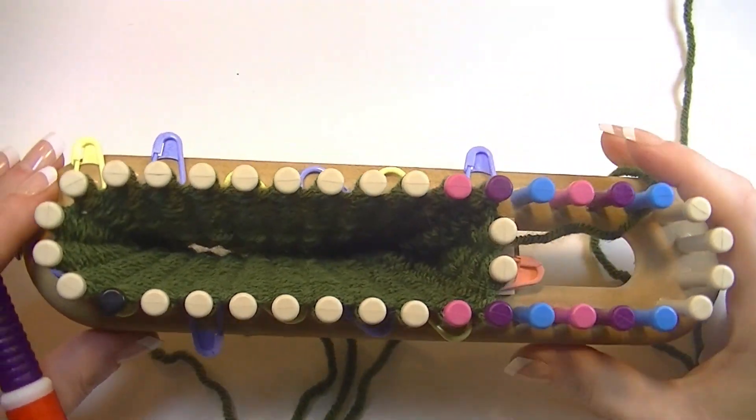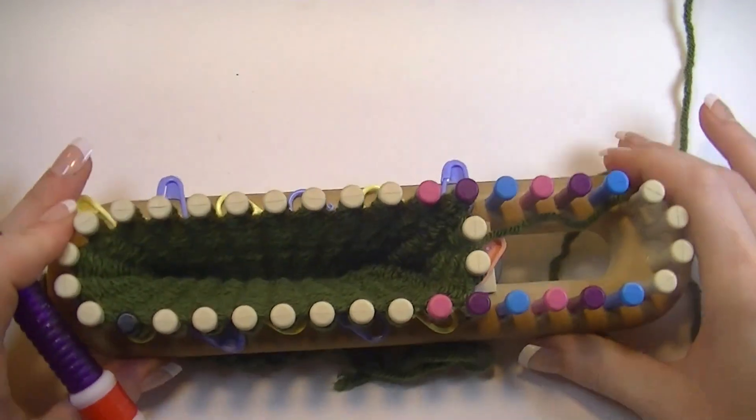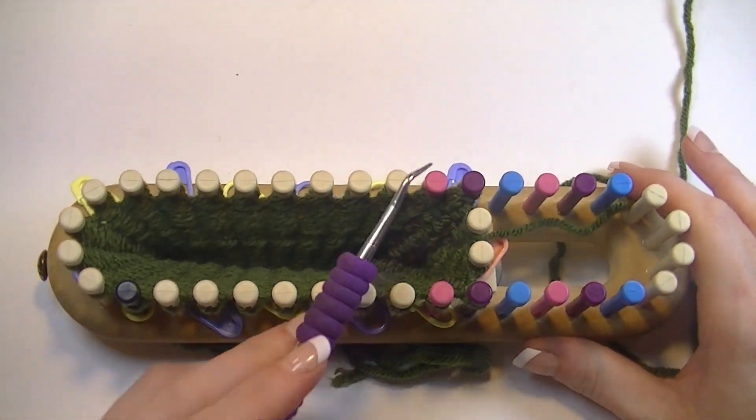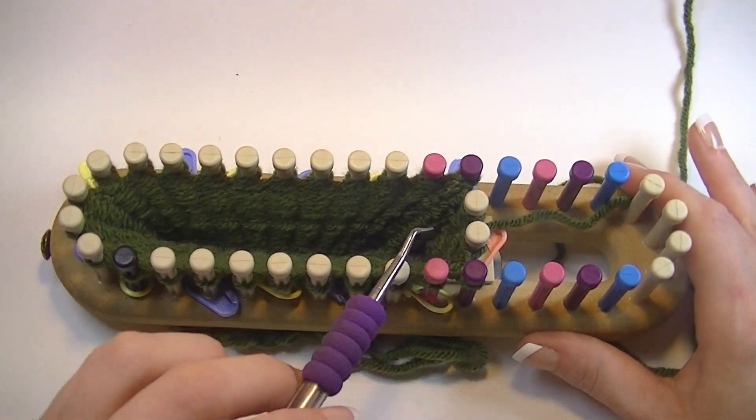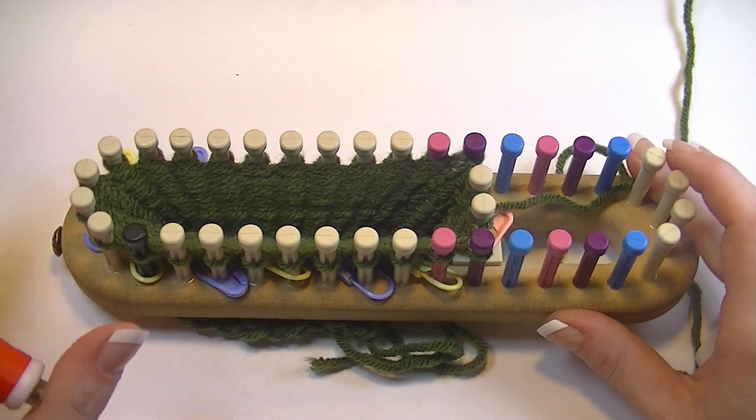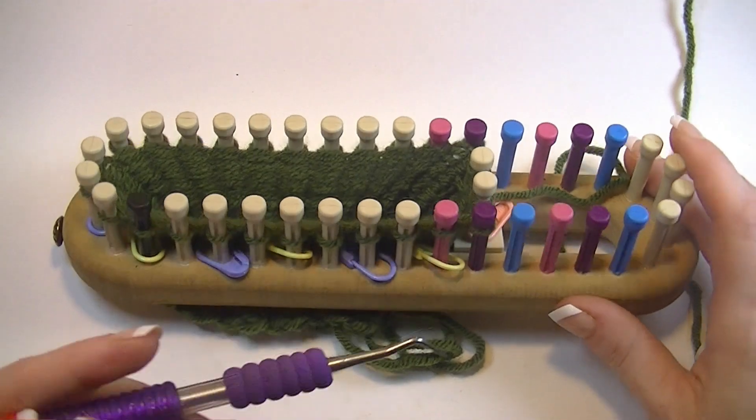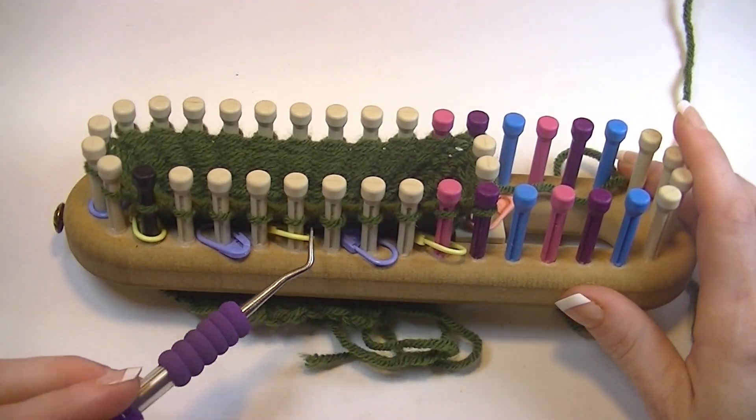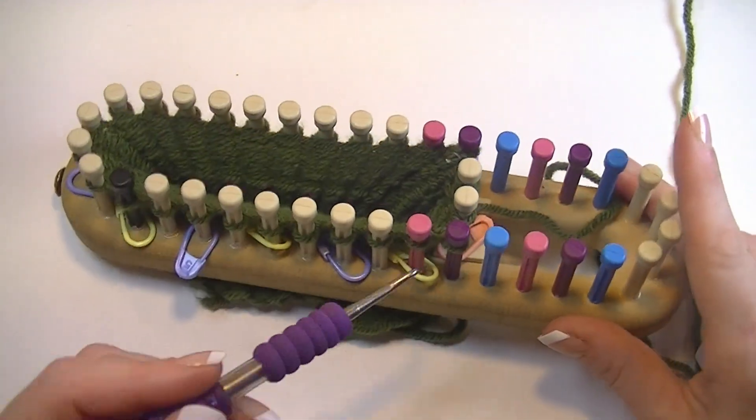We are at the arm and cuff section of the glove. So for round 32 through 51, that is 20 rounds, you are going to do your knit stitch. And then from round 52 through 56, that is five rounds, you are going to go back to your knit one, purl one. So if you still have your pegs marked, just use those same pegs.